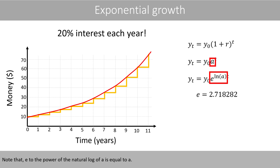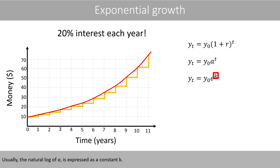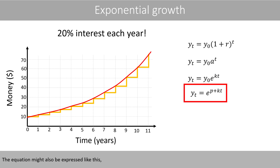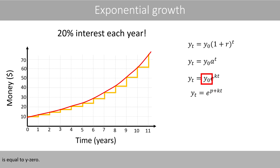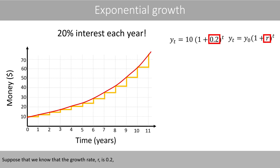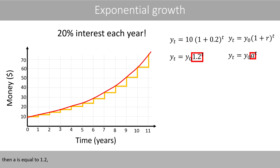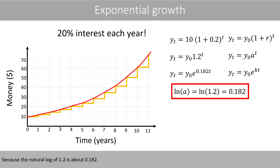Note that E to the power of the natural log of A is equal to A. Usually, the natural log of A is expressed as a constant K. The equation may also be expressed with E to the power of P equal to Y₀. Suppose that we know that the growth rate R is 0.2; then A is equal to 1.2, and K is equal to about 0.182, because the natural log of 1.2 is about 0.182.